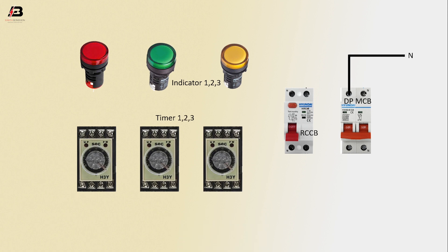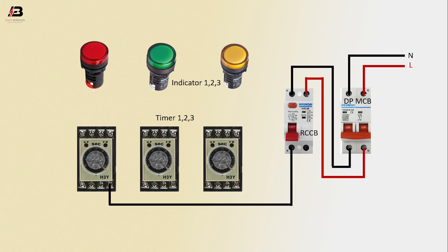Neutral connection to DPMCB circuit breaker, phase connection to DPMCB circuit breaker, output connection from DPMCB to connect RCCB. Neutral connection from RCCB to connect timer 1, timer 2, and timer 3.